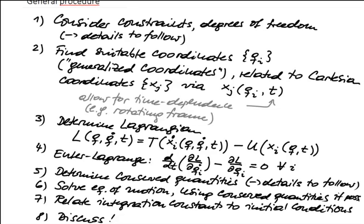We wrote down the Lagrange function and determined it as a function of the new coordinate s and the velocity s-dot, exactly in the way described: taking the kinetic energy in Cartesian coordinates, inserting the transformation law, and likewise for the potential energy. Then we moved on and wrote down the Euler-Lagrange equation. At that point we actually stopped after step four. Later on, we will come back to the inclined plane and complete the remaining steps.